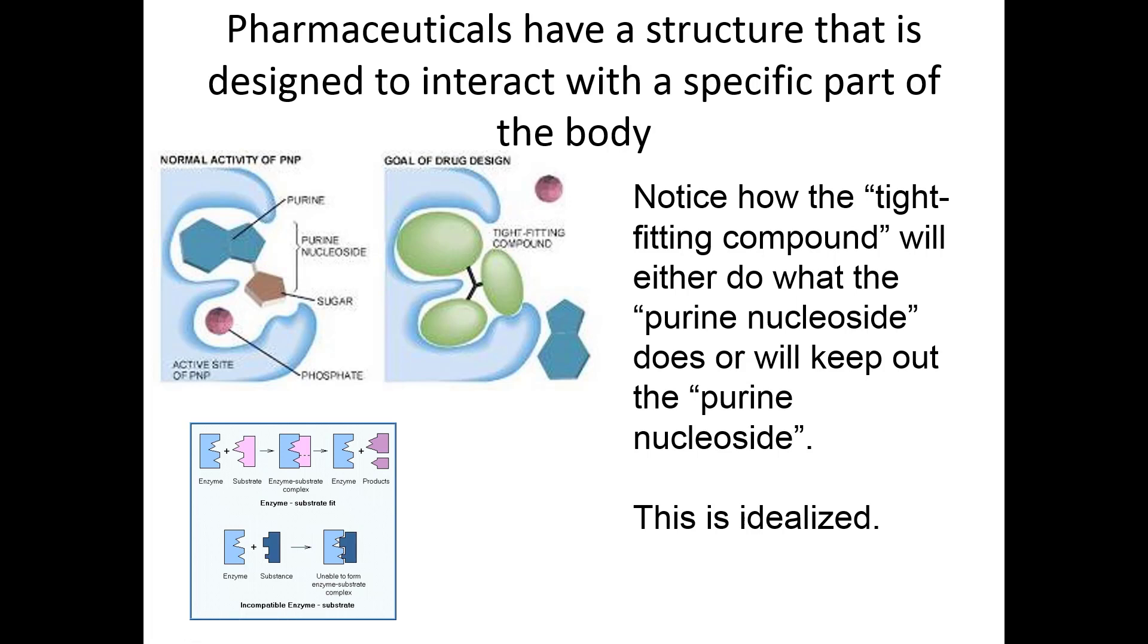Pharmaceuticals. There's a whole industry that deals with making kinds of molecules that can help human systems. These molecules of purine nucleosides have purine and sugar and phosphate all together, and then they fit nicely into a part of your body. When someone designs a drug to help, they want to make a drug that fits in the same place that this purine nucleoside fits. But maybe they want to put it in there so that it blocks something else. This tight-fitting new compound that chemists designed does what the purine nucleoside does. It mimics what it does or keeps out the purine nucleoside if that's causing a problem.